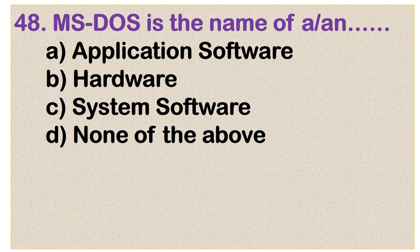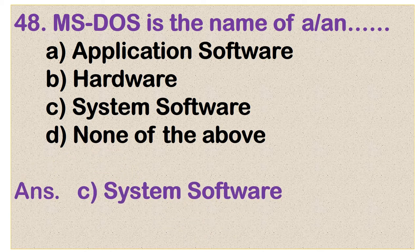Question number 48: MS-DOS is the name of application software, hardware, system software, or none of the above. Option C is the correct answer: it is a system software.